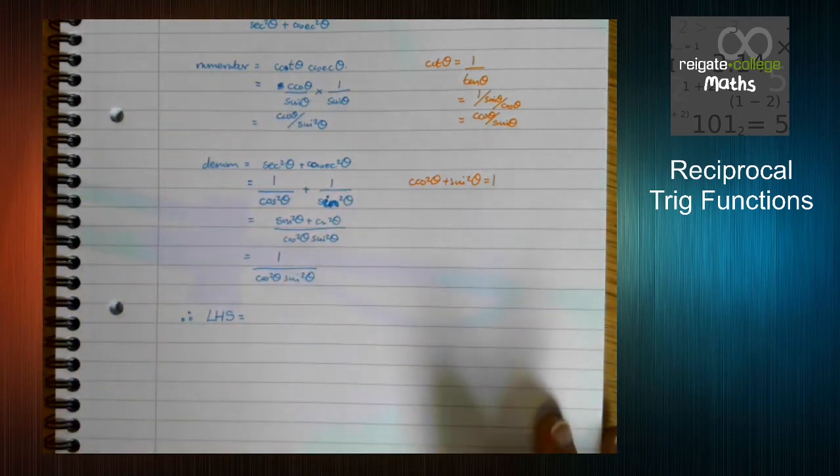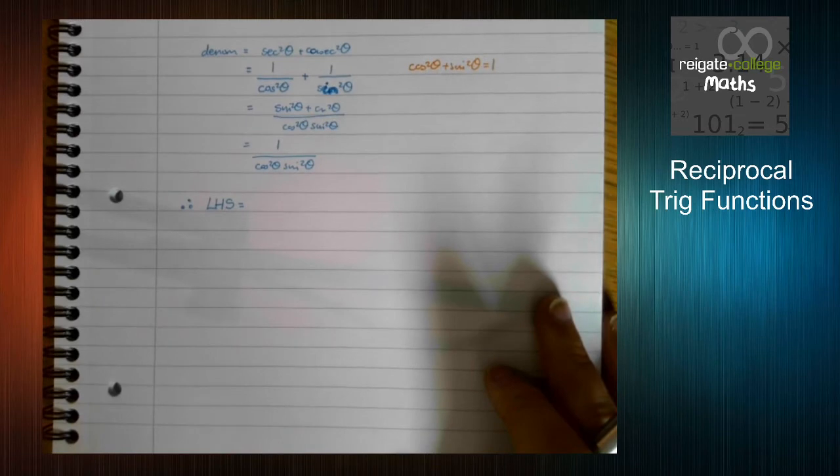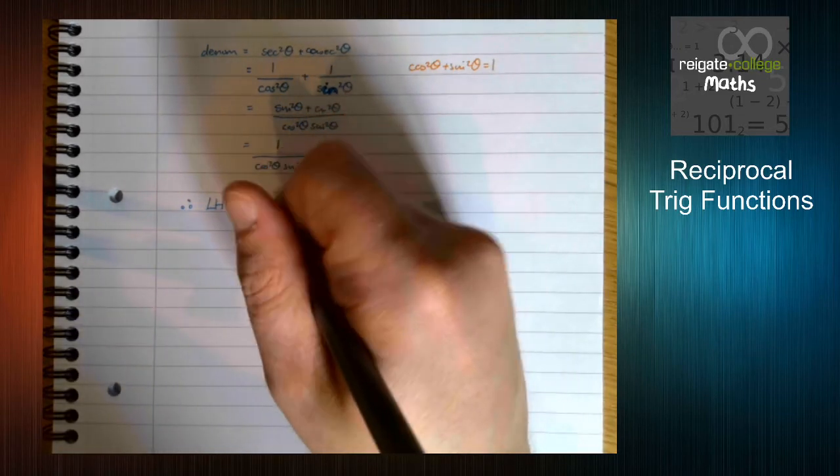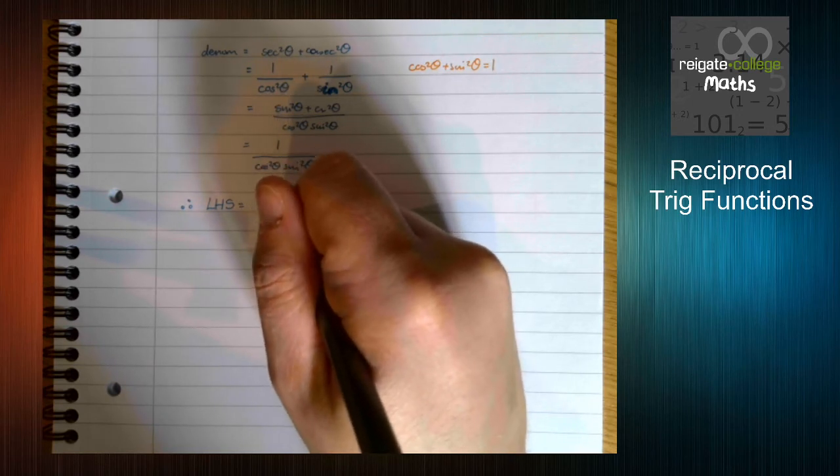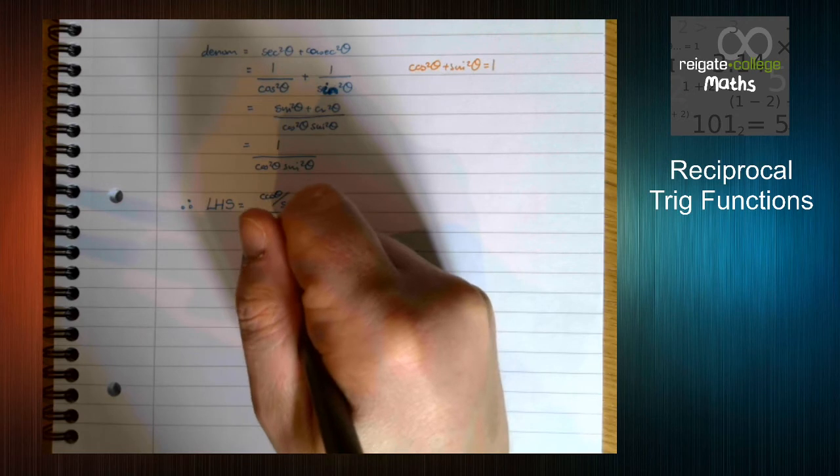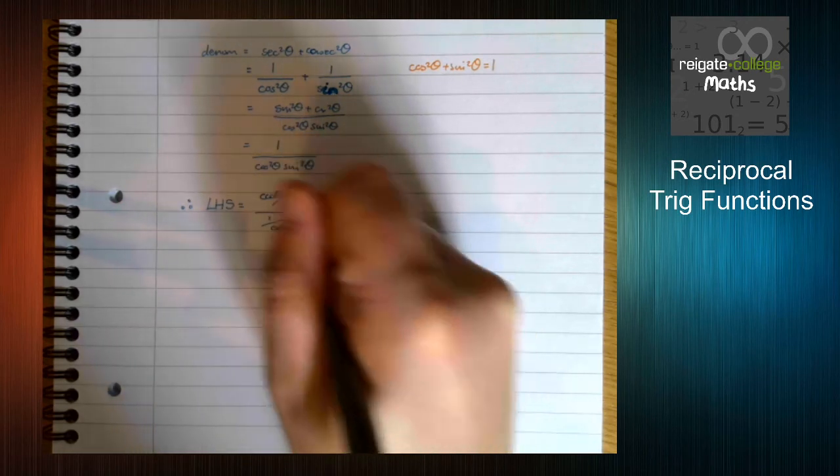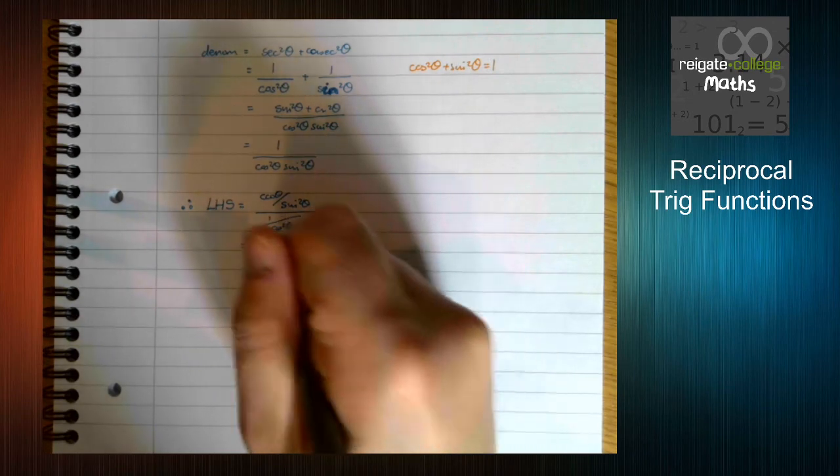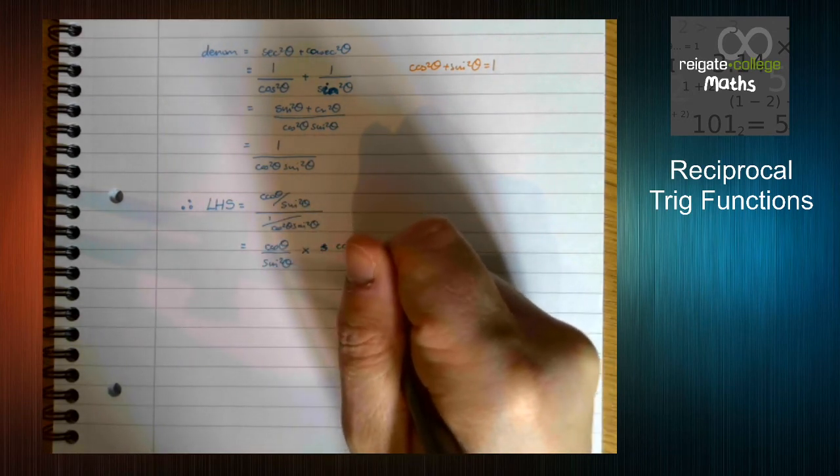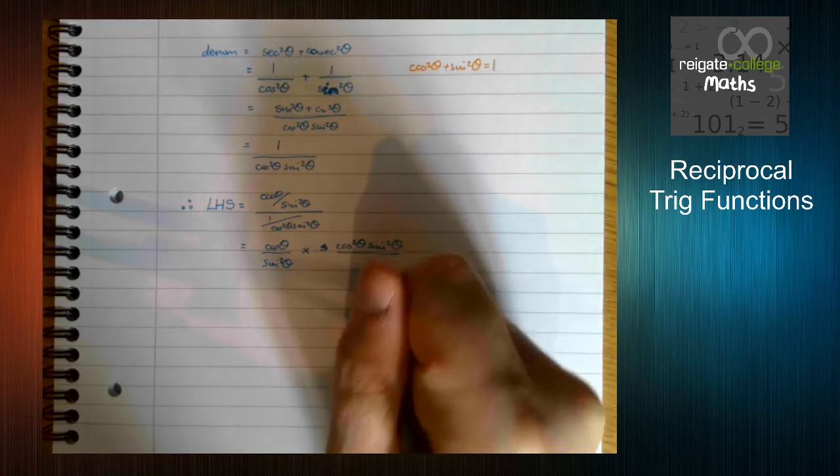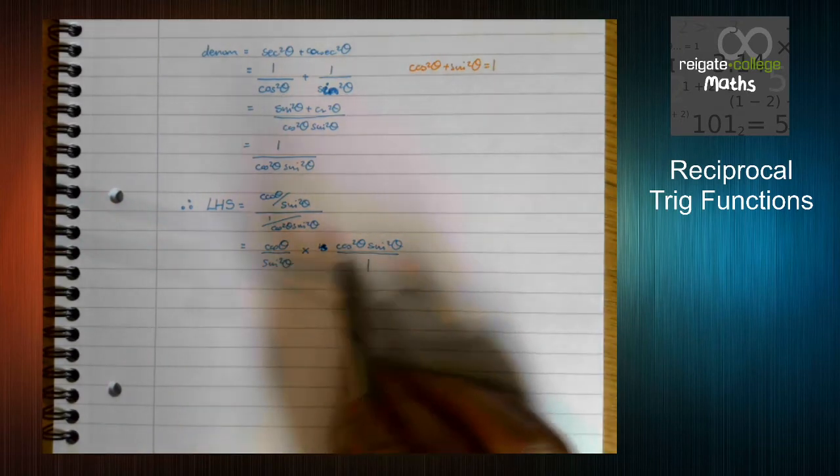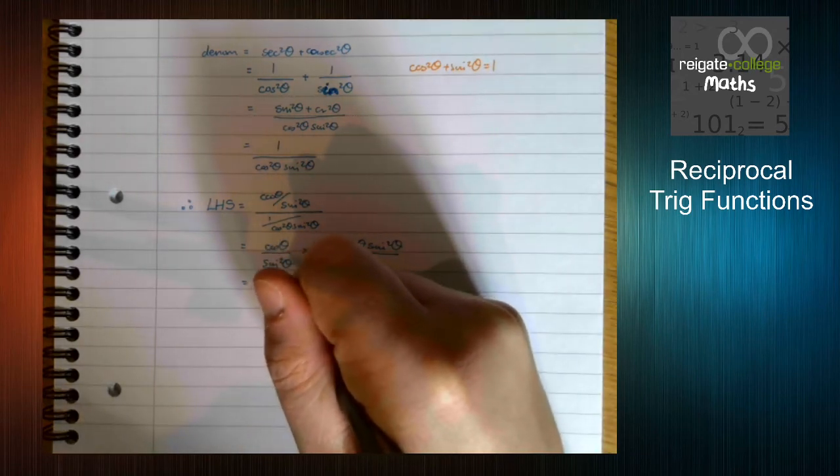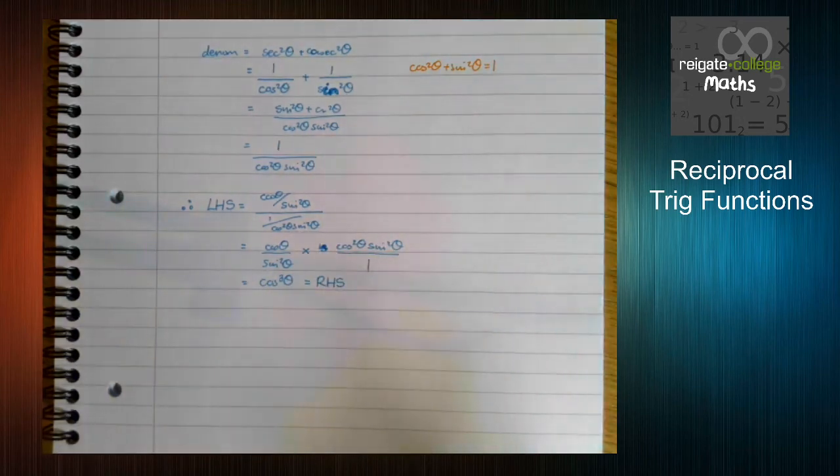Now, we can start playing around with this function. So the left-hand side of the original expression is going to be our numerator divided by our denominator. But we know that stacked fractions are quite unpleasant. So we change the division into multiplication and we flip the bottom fraction. We can now see that the sine squared θs are going to cancel out, and we've got cos θ times cos squared θ, which is what we wanted.